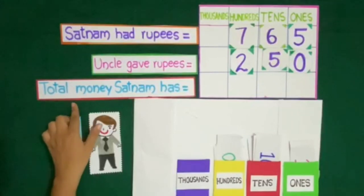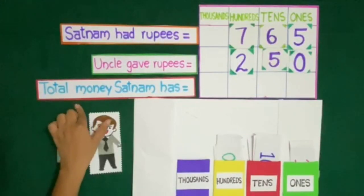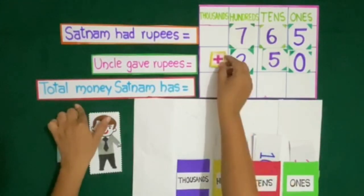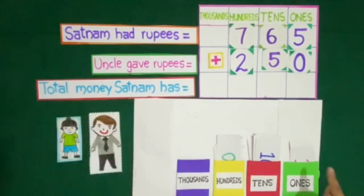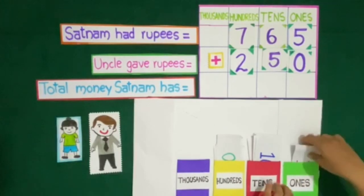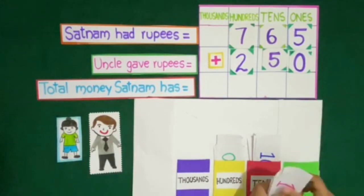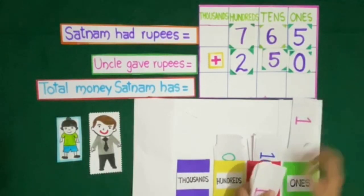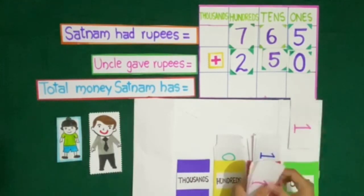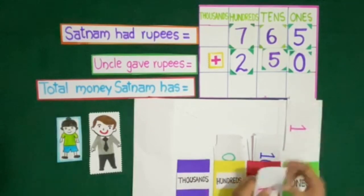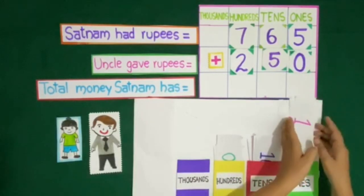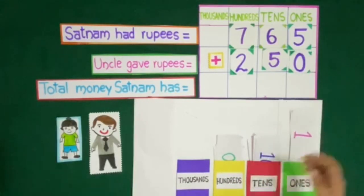Now let us count the total money Satnam has. First of all we will count the 1 rupee notes: 1, 2, 3, 4, 5 — which means 5 at 1's place.